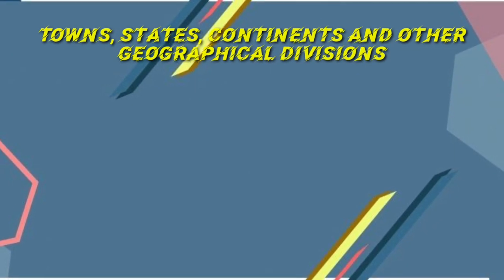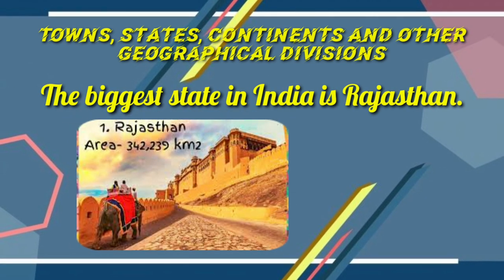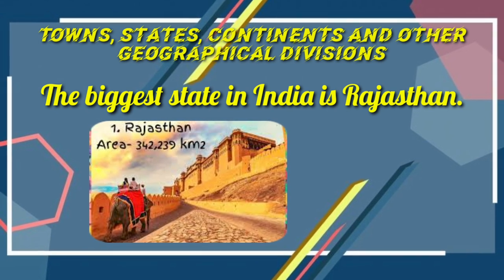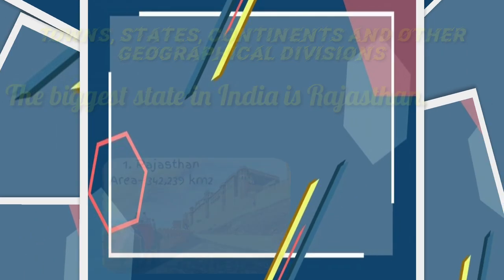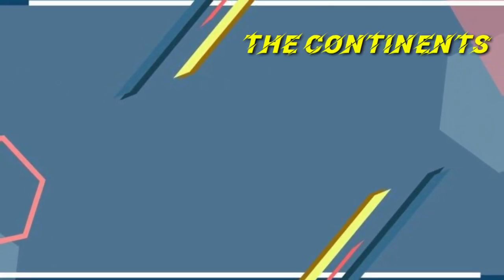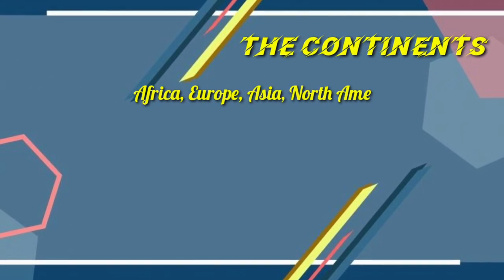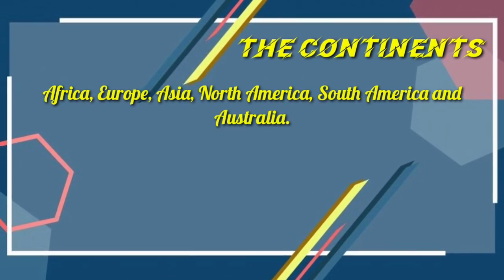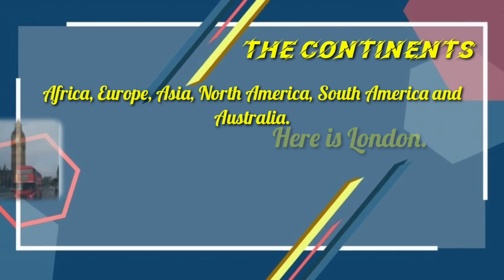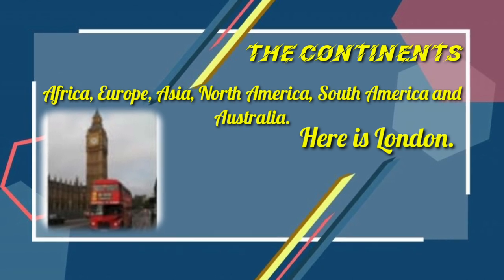Towns, states, continents, and other geographical divisions. Example: 'The biggest state in India is Rajasthan.' Since Rajasthan is the name of a state, we write it with a capital R. Continents in English are also written with capital letters: Africa, Europe, Asia, North America, South America, and Australia — the first letter is always capital. London is the name of a place, so it has a capital letter.